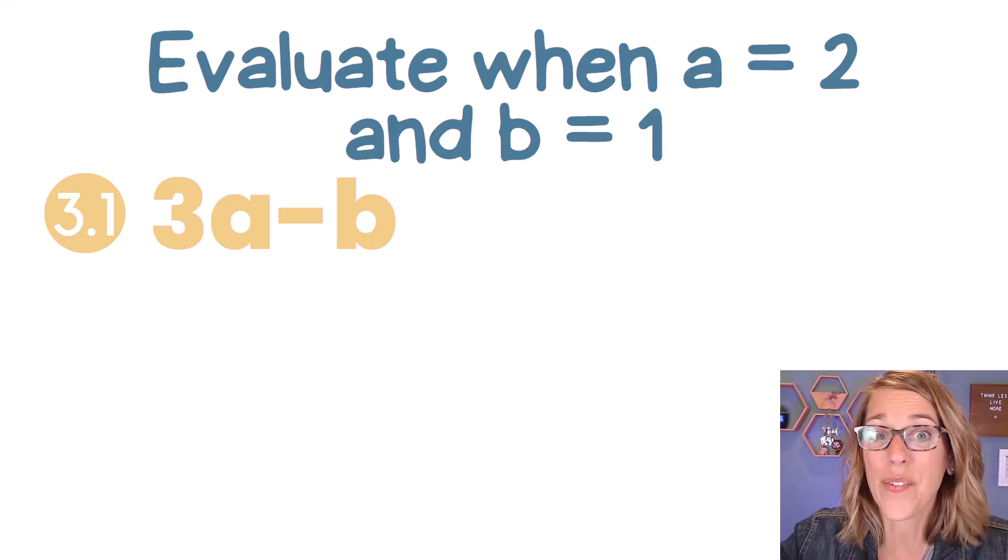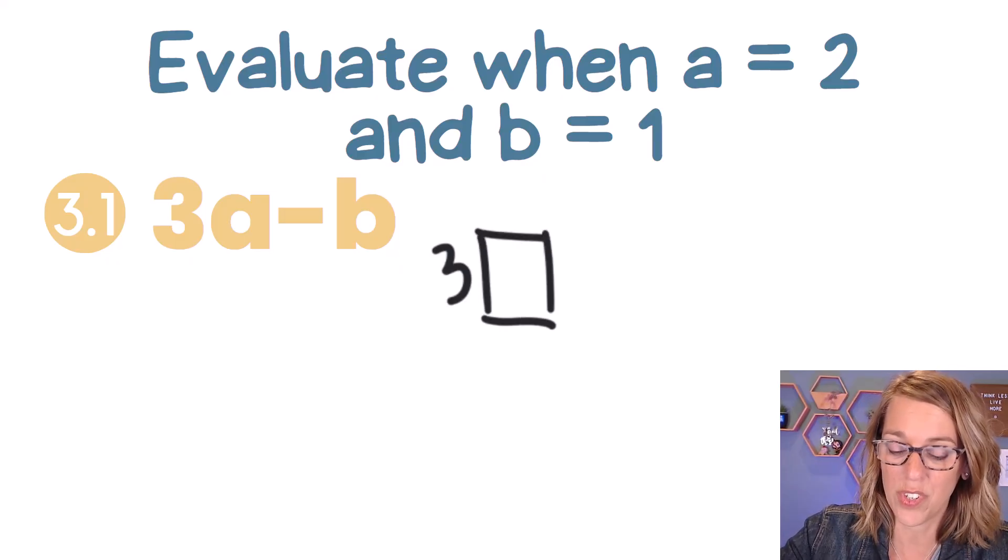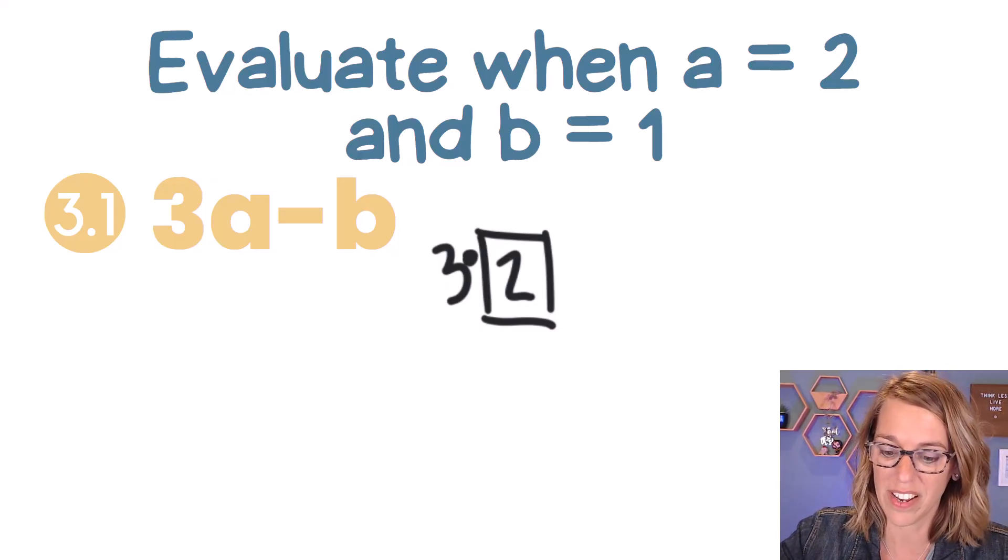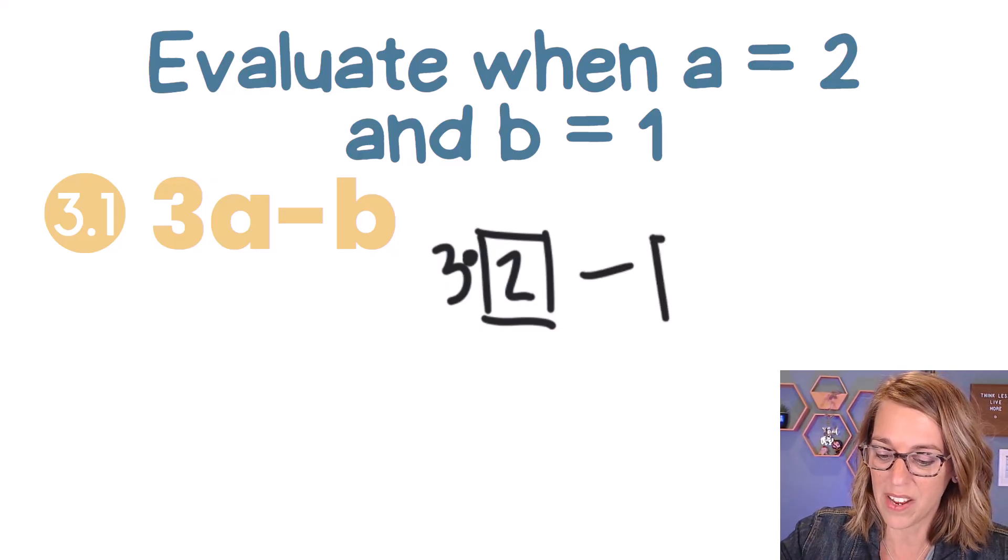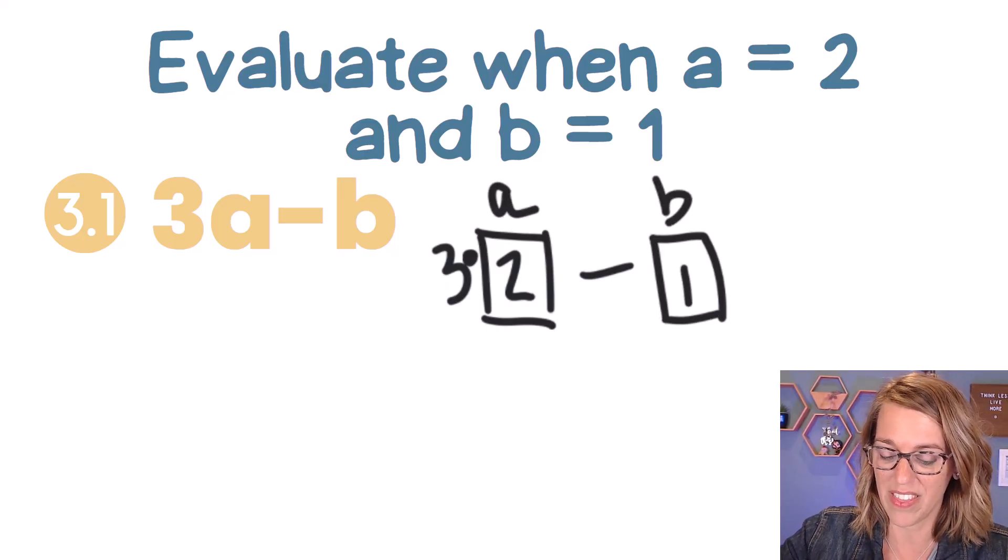Let's see how you did, or go ahead and follow along with me. So I've got 3 times my A, but A is equal to 2, and remember we're multiplying, so I'm going to put in that dot for multiplication, minus B, and B is equal to 1. So I've got my A there and my B there.